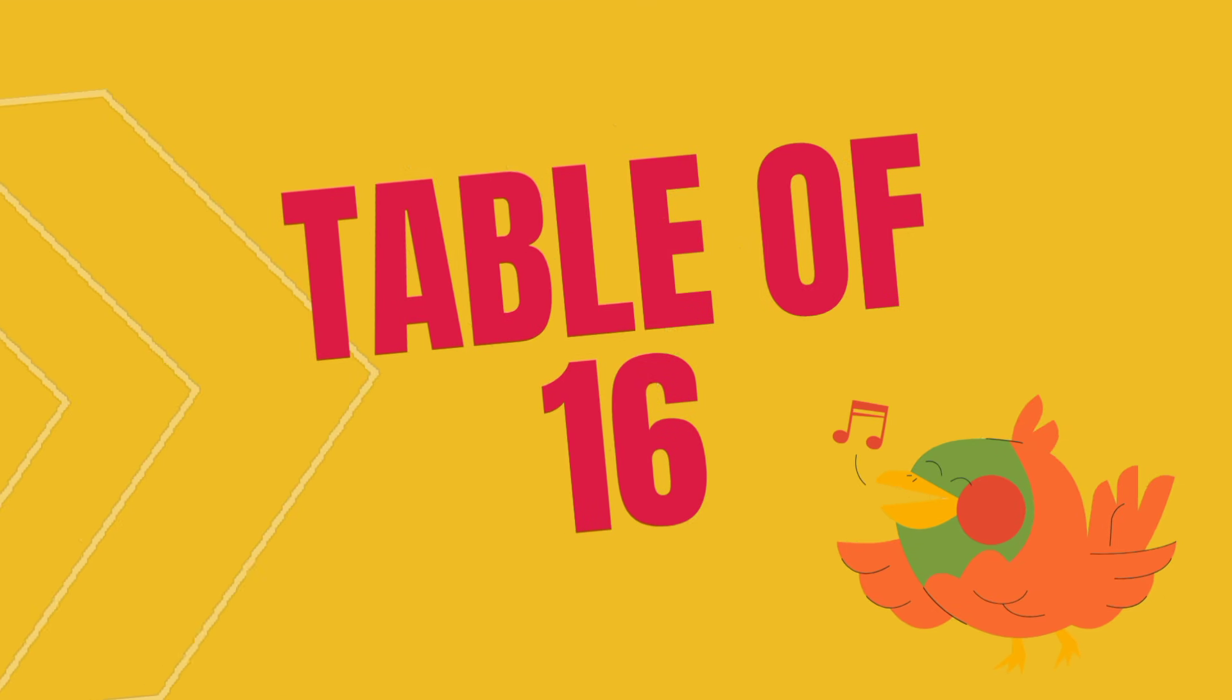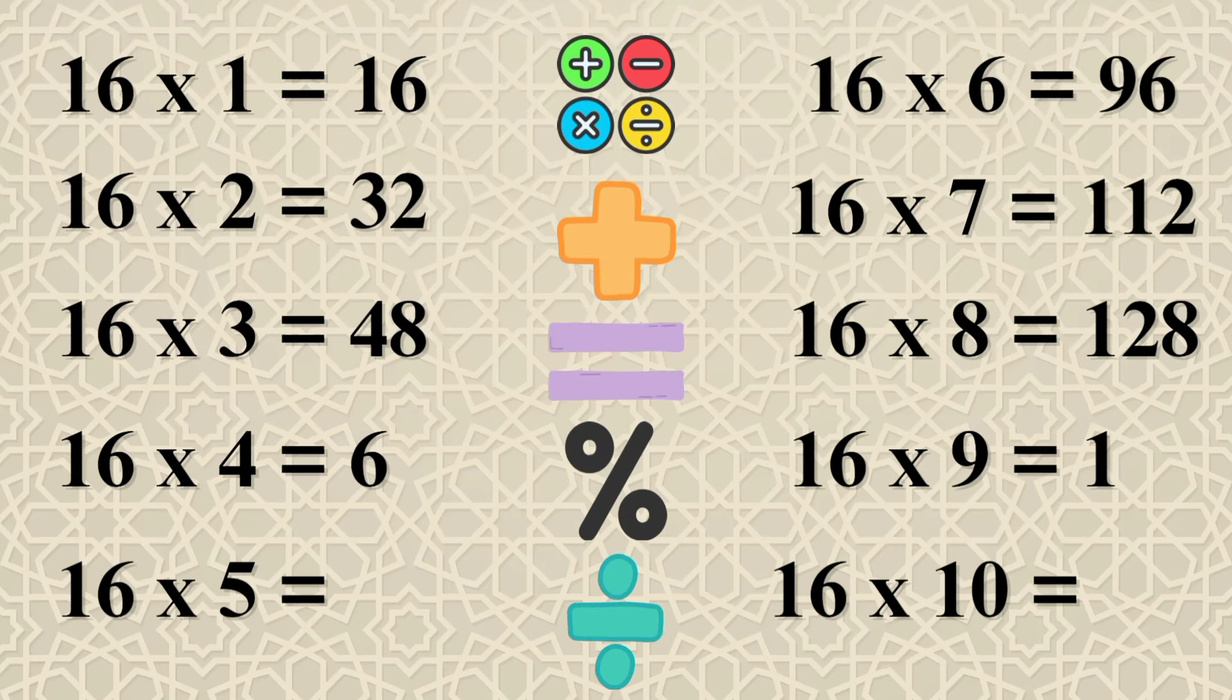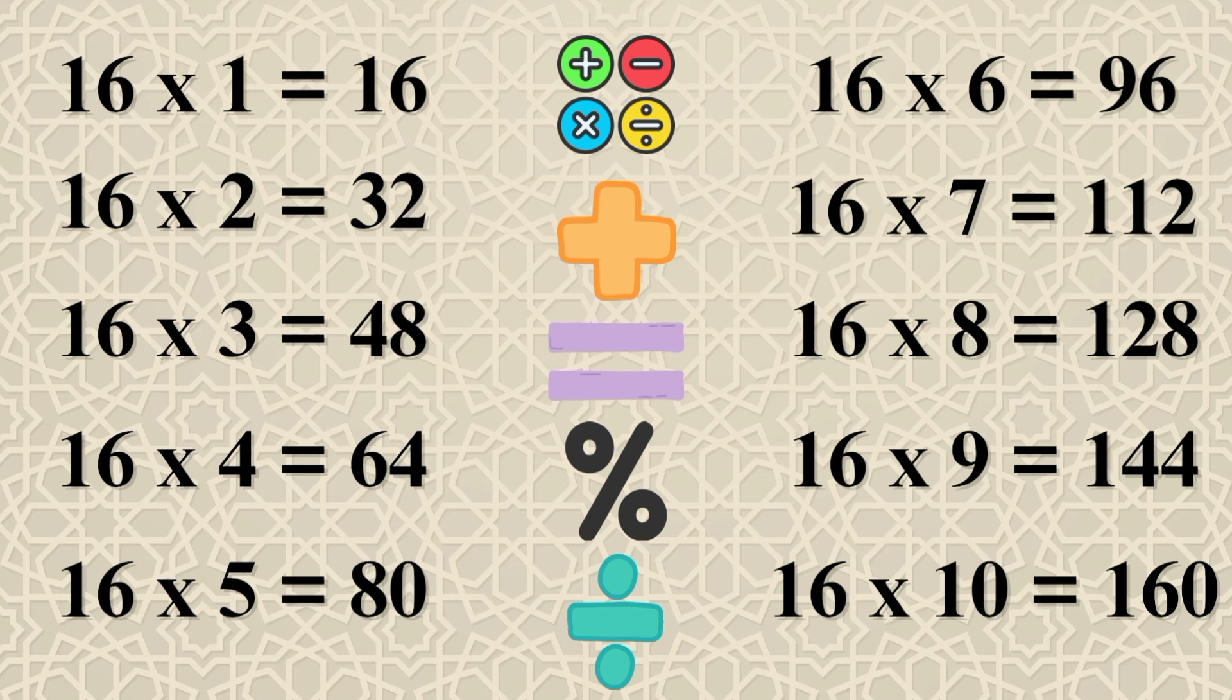Table of 16: 16×1=16, 16×2=32, 16×3=48, 16×4=64, 16×5=80, 16×6=96, 16×7=112, 16×8=128, 16×9=144, 16×10=160.